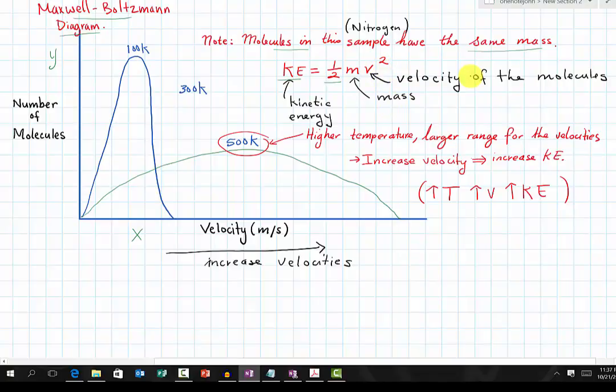In this graph, we are looking at the changes in temperature. You notice 100 Kelvin, 300 Kelvin, and 500 Kelvin. The most important part is the range of velocities. At 100 Kelvin, the low temperature, the molecules can only travel at a limited velocity.